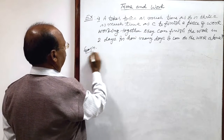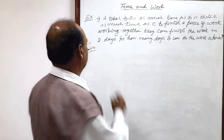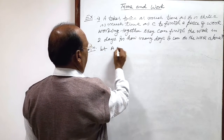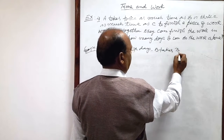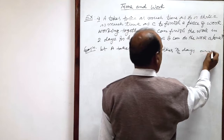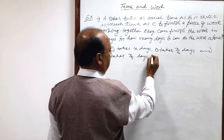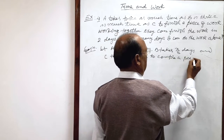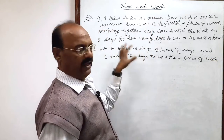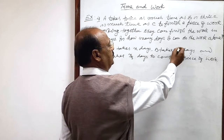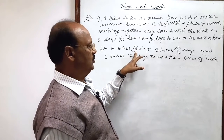Just look at this solution. Given that A takes twice as much time as B, let A take x days, B takes x by two days, and C takes x by three days. Check the condition: B takes x by two days and A takes x days, so A's time is two times B's time — x is two times of x by two.